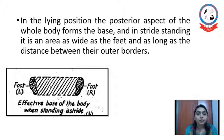For human body, when a human body is lying in lying position, the posterior aspect of the whole body forms the base. And in tight standing, it is the area as wide as the feet as long as the distance between their outer borders is the effective base for the human body. So, the best stabilizing position of a human body is if the center of gravity is situated within this base of support.